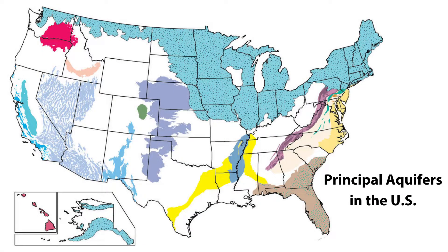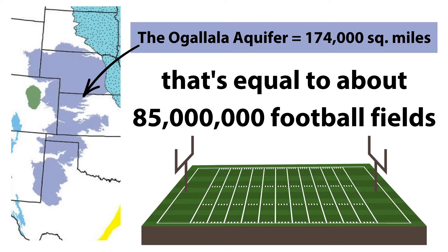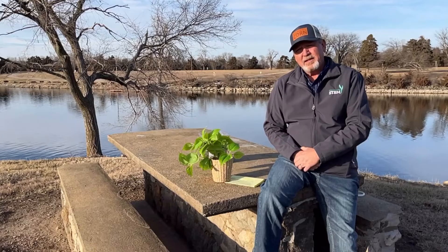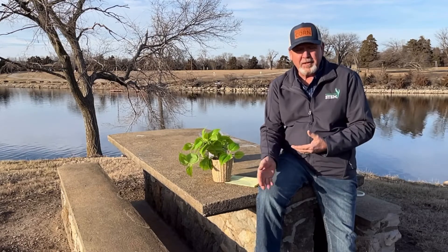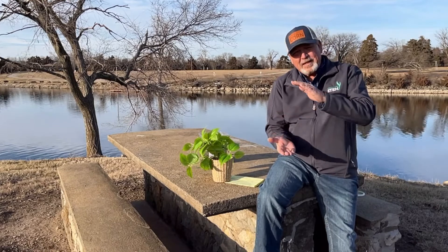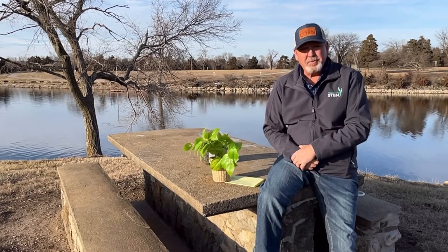Aquifers are all over the United States. In Kansas, we have the Ogallala Aquifer — some people call it the High Plains Aquifer. It formed millions of years ago. It's 174,000 square miles, which equals about 85 million football fields. It's actually under eight different states, 50 to 300 feet below the surface, and it varies in thickness from a few feet to almost a thousand feet, averaging around 200 feet thick.